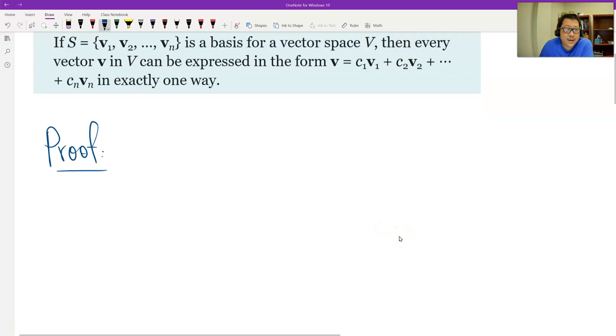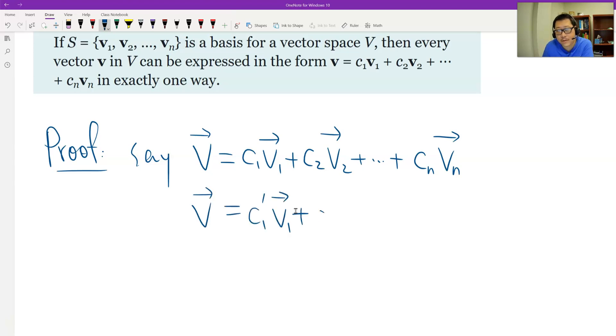So let's say if two ways exist. V as a vector is the first representation, let me write. And then I write the second way to represent V. We use a prime to describe a different coefficient. The first coefficient is c1 to cn, and the second representation has the coefficient c1 prime to cn prime.